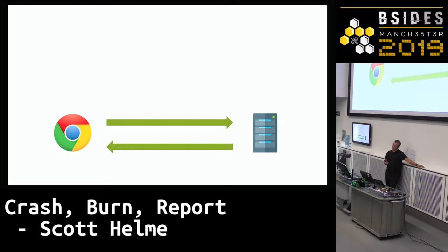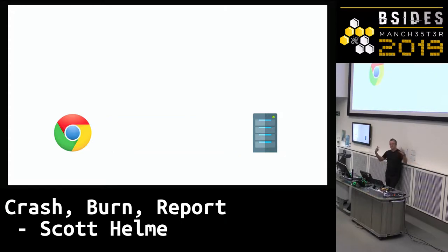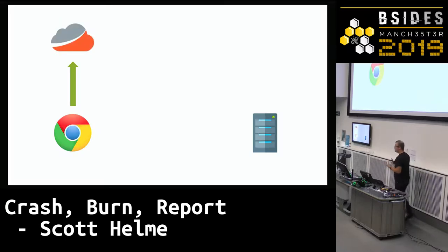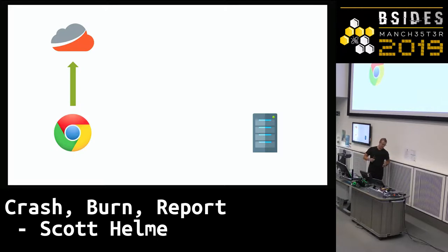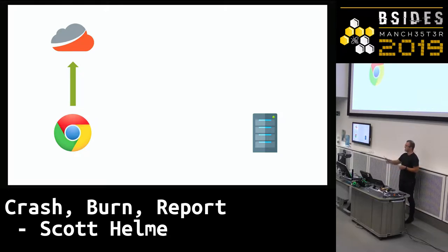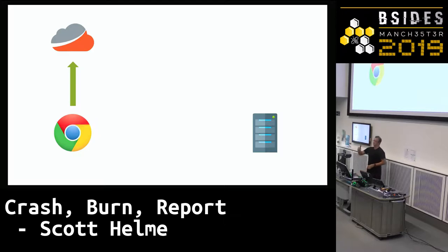The Reporting API introduces an external out-of-band reporting channel. You can say to the browser: if you try and come to my website and something is wrong — DNS is broken, HTTPS certificate expired, whatever — and if it can't get to your site, it can't send telemetry through normal channels. So you need an out-of-band channel. And there's no code or agent to deploy; visitors don't need an extension. This is native browser functionality.